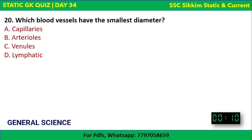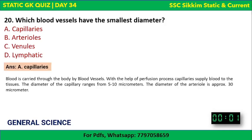Science Question 5 (last question): Which blood vessels have the smallest diameter — capillaries, arterioles, venules, or lymphatics? The correct answer is capillaries. Capillaries supply blood to tissues through the perfusion process. The diameter of a capillary ranges from 5 to 10 micrometers. To put this in perspective, if you divide a 1-meter scale into 1 million parts, one of those parts equals 1 micrometer — so capillaries are extremely small.